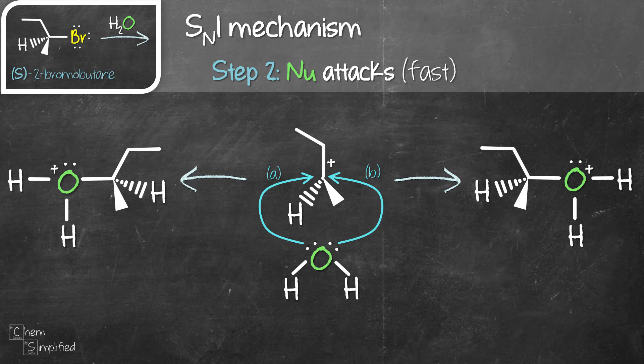These two intermediates are not the same. They are actually enantiomers. Since there's an equal chance for the nucleophile to attack from either side, the product that we get is going to be 50% each.